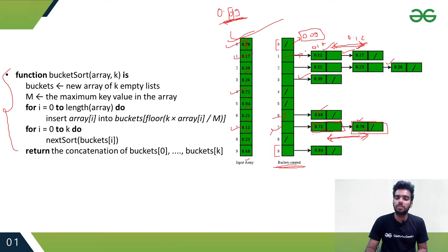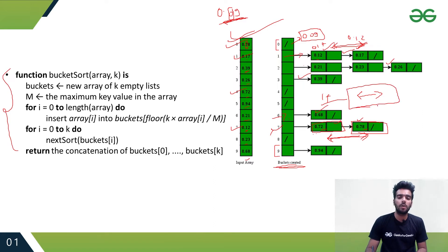After storing all values in their respective buckets, if any bucket contains more than one element, we apply a sorting algorithm among those elements to sort them in relative order. That's how bucket sort works — it doesn't depend on comparison, it depends on the range of values given in the input array.